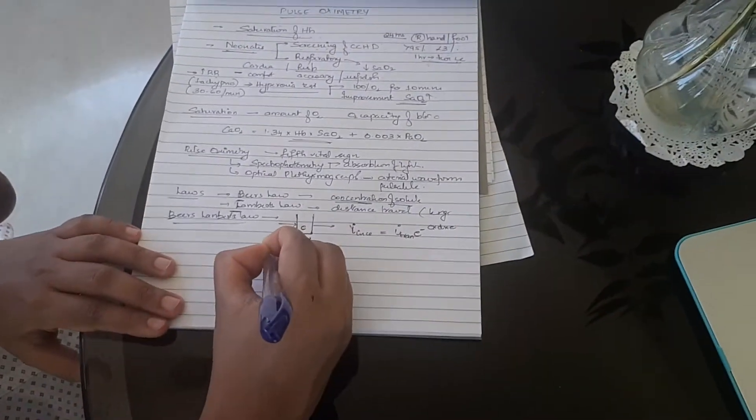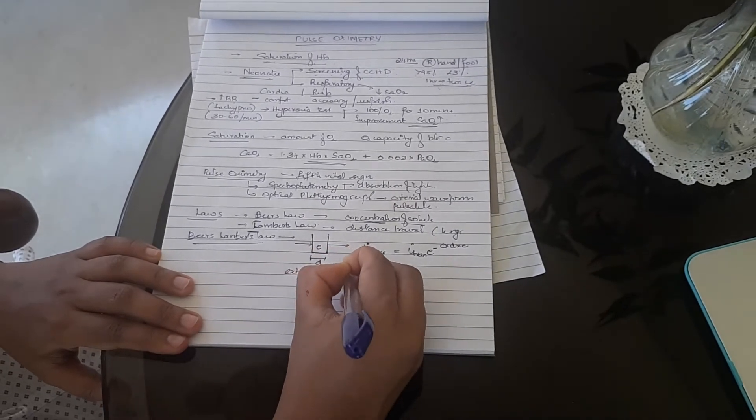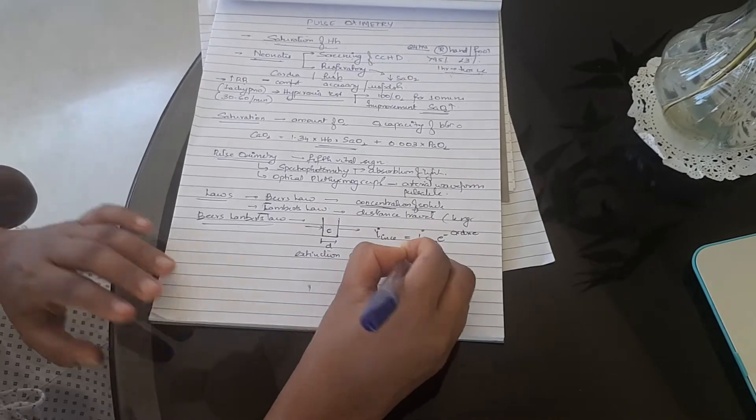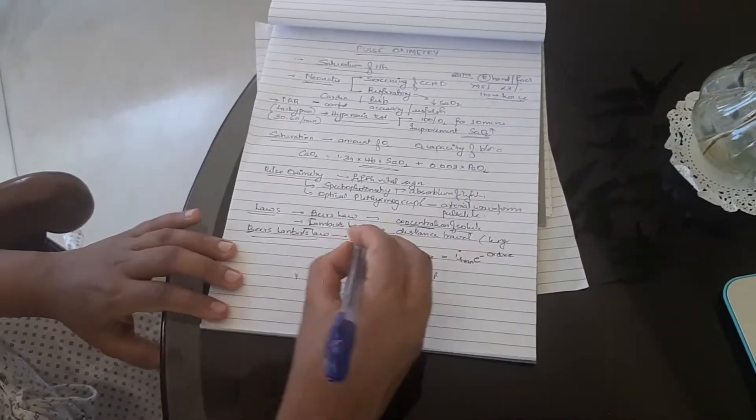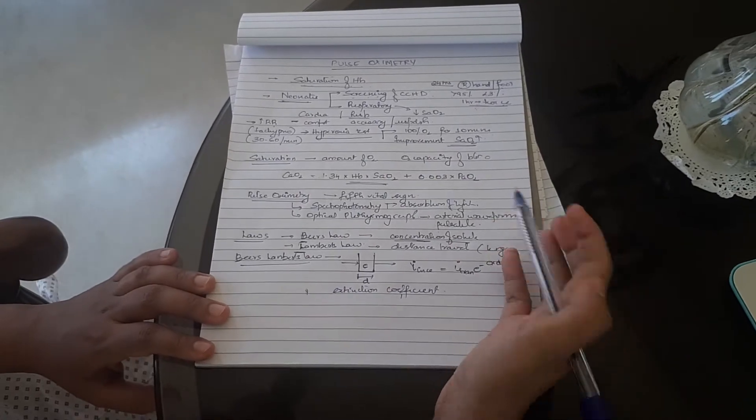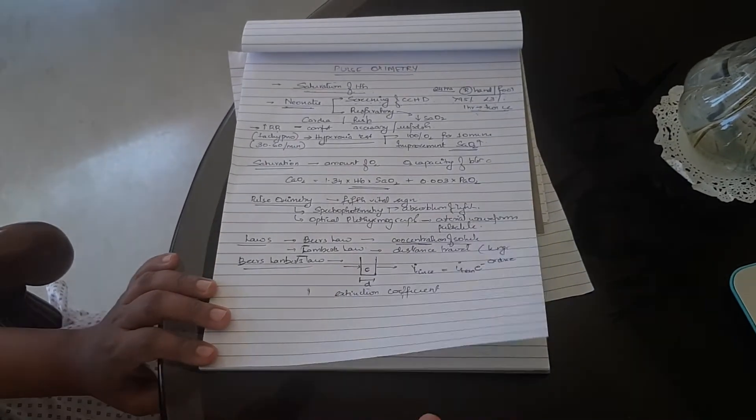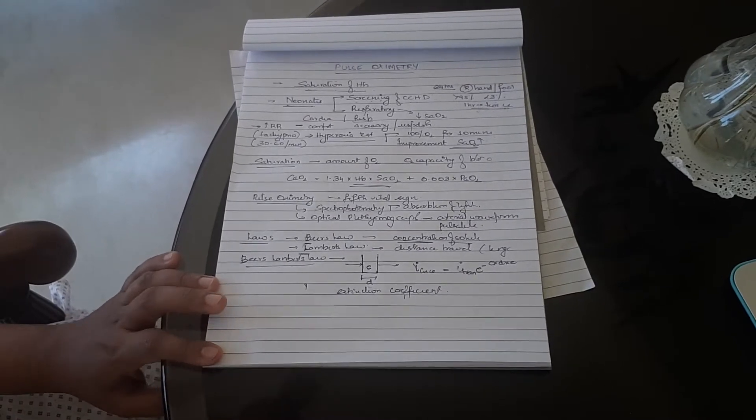E is basically a constant called the extinction coefficient which is different for different substances depending upon the amount of light they have a tendency to absorb. So you are seeing how much incident light is transmitted through the cuvette and based on the amount absorbed you calculate the concentration of solute.